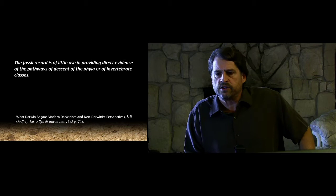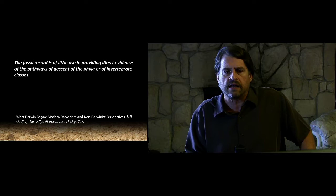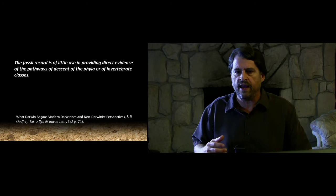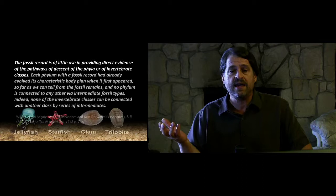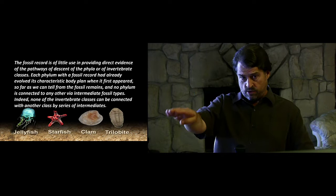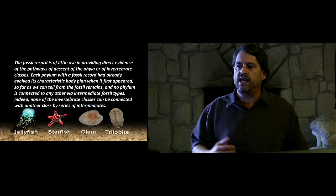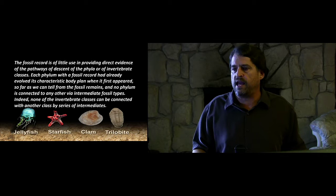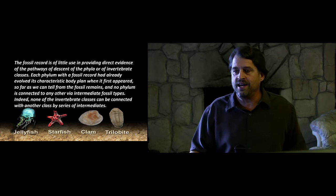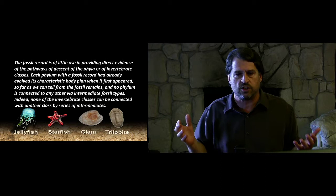Evolutionary biologist James Valentine of the University of California makes this confession: 'The fossil record is of little use in providing direct evidence of the pathways of descent of the phyla or of the invertebrate classes.' What he means is we can't connect the invertebrate classes together by way of fossil forms. He continues: 'Each phylum, when it first appears in the fossil record, had already evolved its characteristic body plan, and no phylum is connected to any other via intermediate fossil types.'